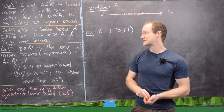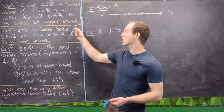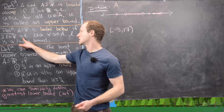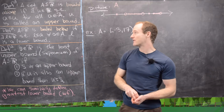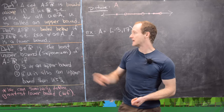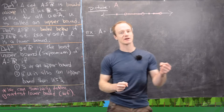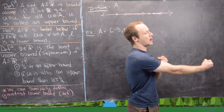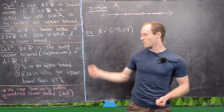We've also got a companion definition for bounded below. So we say a set A of R is bounded below if there exists an L in R such that L is less than or equal to every element a in A. Here L is called the lower bound, meaning we can find an element of the real numbers that is smaller than every element from our set A.